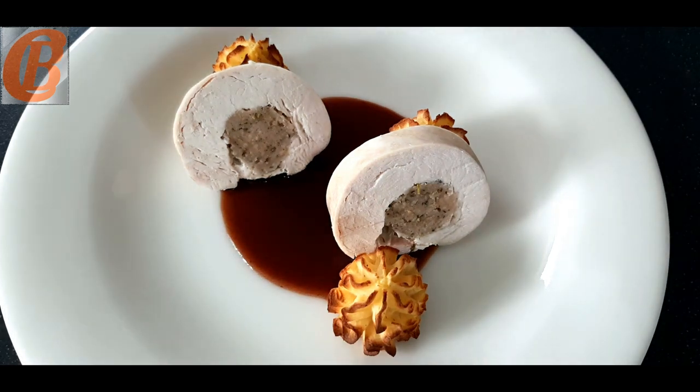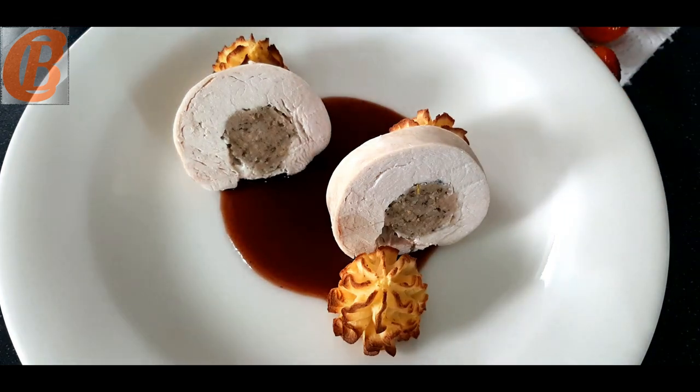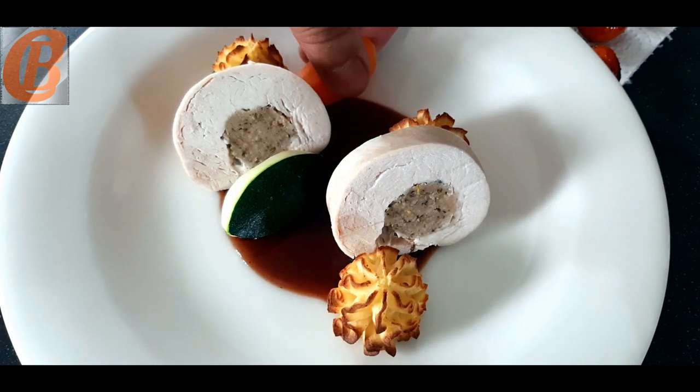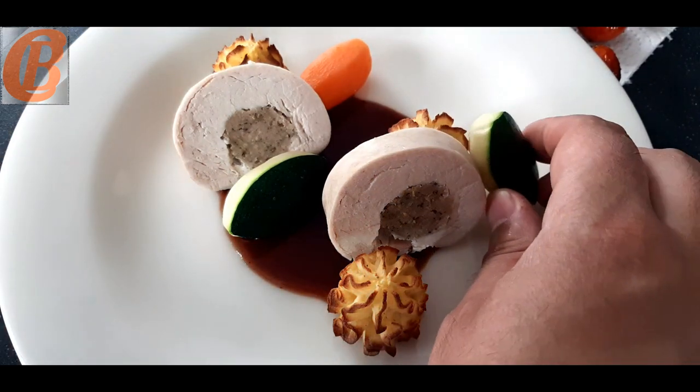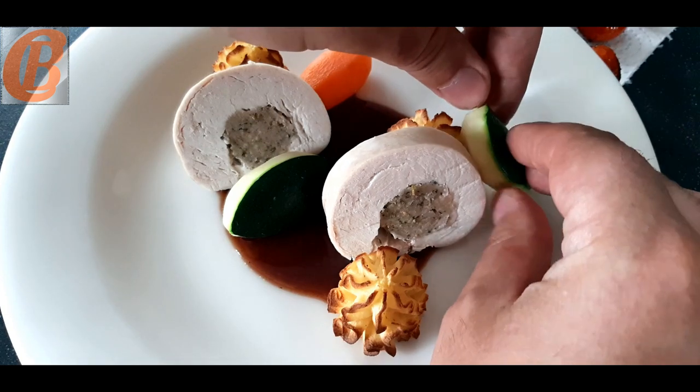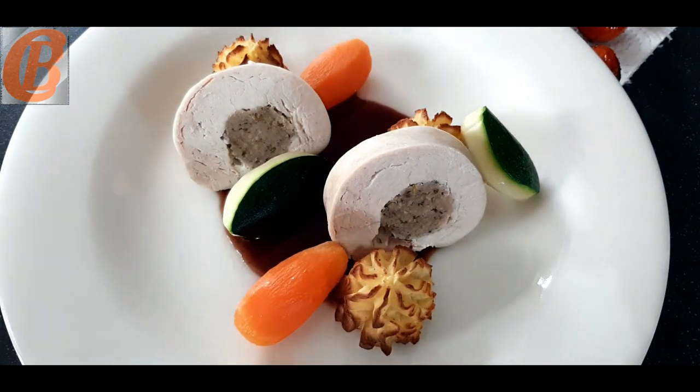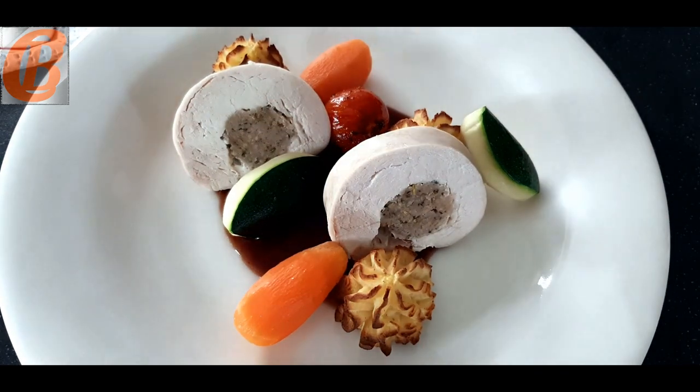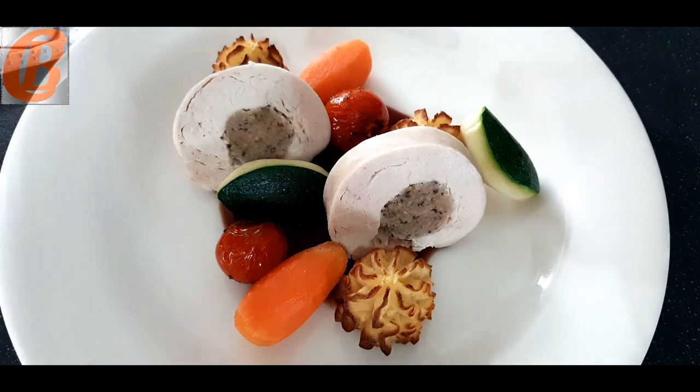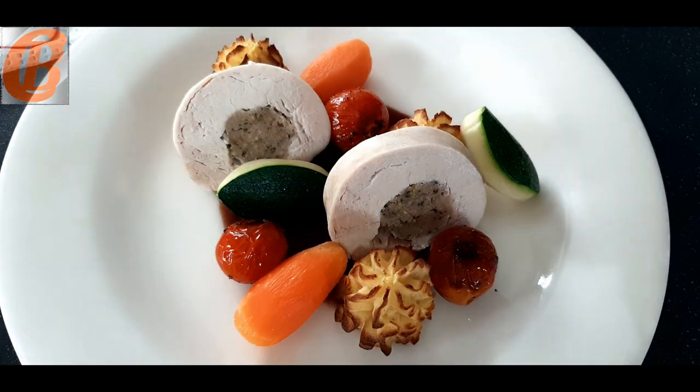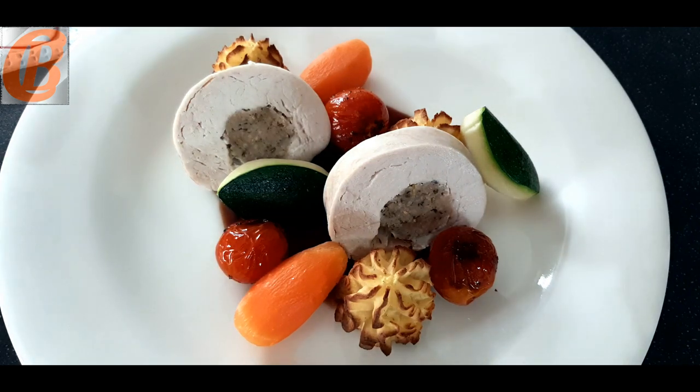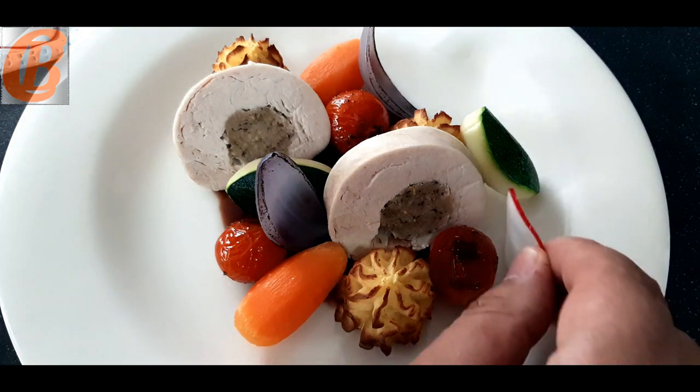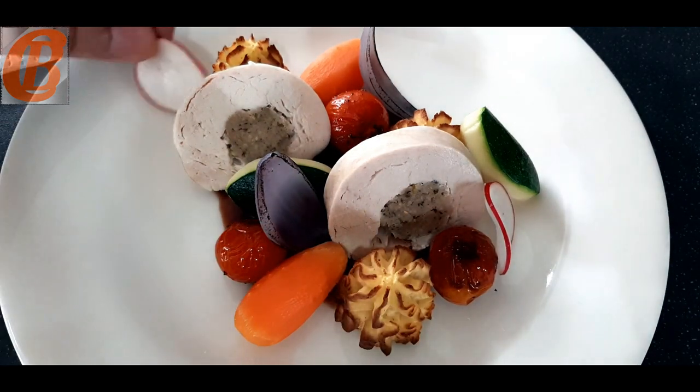Now you can serve this with any vegetable accompaniments that you like. I've decided to go for some turned courgettes and carrots, some confit tomatoes which I've made by just pan frying and then leaving in a bit of garlic and thyme oil for a few hours, and then I've got some shallot petals which I've just braised in chicken stock and then given a quick blowtorch before separating into individual pieces. And finally for some texture, some thinly sliced radish. And that's it, you're done.